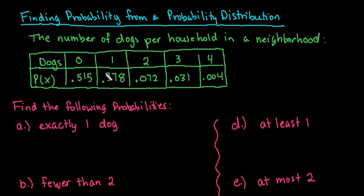Hi, for this video we're going to look at how to find the probability when we're given a probability distribution. For this example, we have a discrete probability distribution.